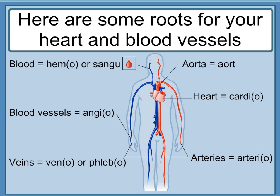Blood is 'hem-', 'hemo-', or 'sangui-'. Blood vessels are 'angi-' or 'angio-'. Veins are 'ven-', 'veno-', 'phleb-', or 'phlebo-'. Aorta is 'aort-'. Heart is 'cardi-' or 'cardio-'. Arteries are 'arteri-' or 'arterio-'.